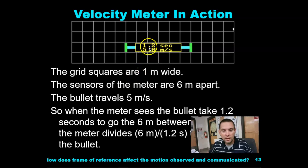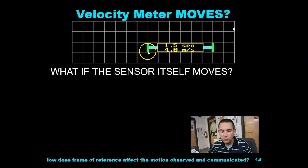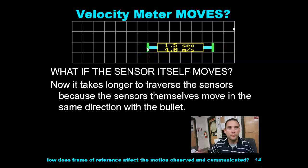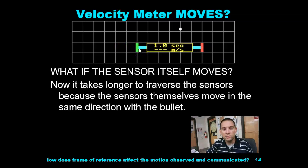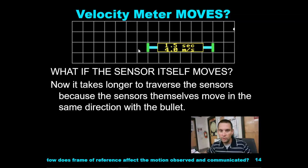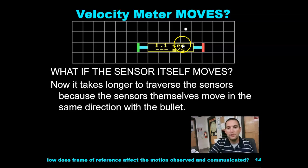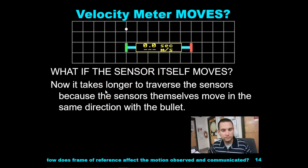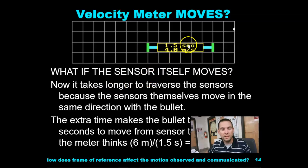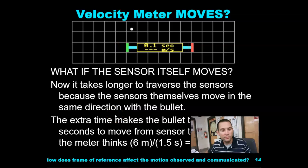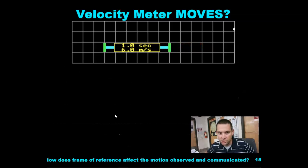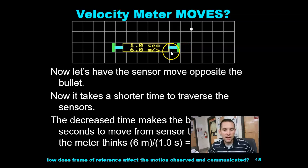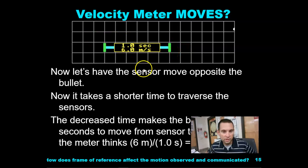What if the sensor moves? So we're looking at this more in-depth than the video we watched. If it takes longer to go through the sensors, remember it starts right here and it stops right here, then that means you're going to have a different velocity. 1.5 seconds instead of 1.2 seconds. The extra time makes the bullet take 1.5 seconds.